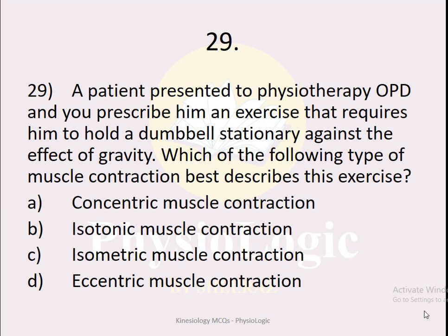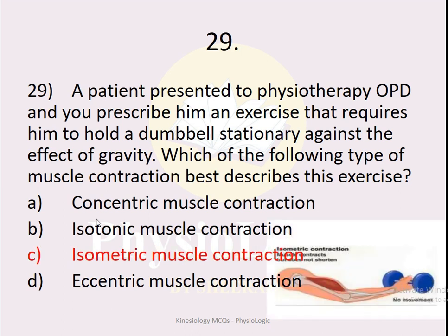MCQ number 29 is scenario-based: A patient is prescribed an exercise requiring him to hold a dumbbell stationary against gravity — no movement is taking place. Option A concentric, option B isotonic, option C isometric, option D eccentric muscle contraction. The correct option is isometric muscle contraction, as discussed in the previous MCQ — the muscle generates tension with no change in length and no joint movement.